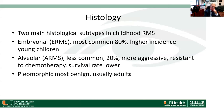The two main histological subtypes of rhabdomyosarcoma are embryonal, the most common at about 80%, with a higher incidence in younger children, and alveolar, less common at about 20%, but more aggressive, more resistant to chemotherapy, and with a lower survival rate. The pleomorphic subtype is benign and usually affects adults. There's also a botryoid subtype that doesn't really occur in the orbital area.